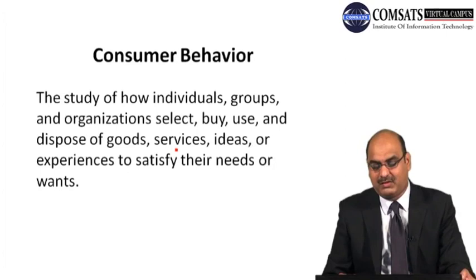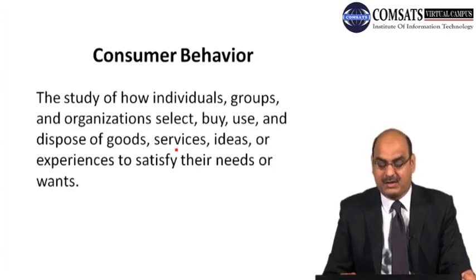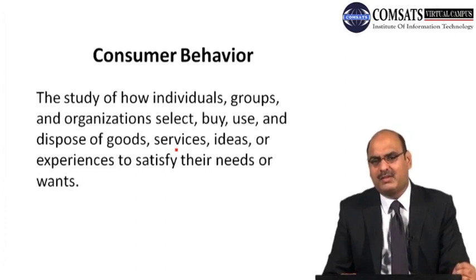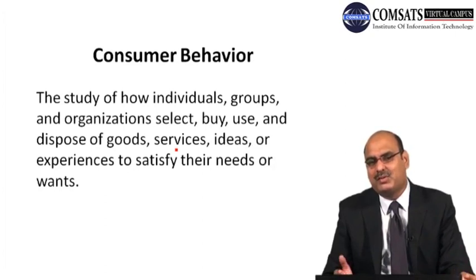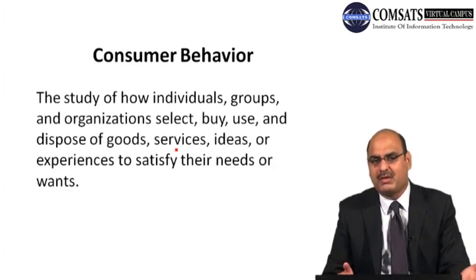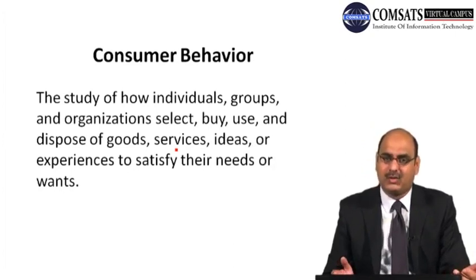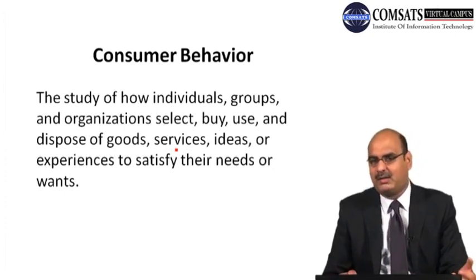So there are three cohorts: individuals, groups, and organizations. There are four phases of consumer behavior. The first is selection — this is the pre-purchase decision. Before buying, whether an individual or organization, they analyze the market to see what alternatives are available. For example, when purchasing a mobile phone, options include Apple iPhone, Samsung, Huawei, Nokia, Q Mobile, and other companies available in the market.